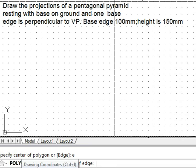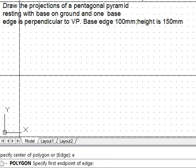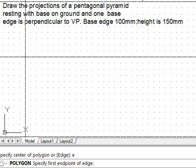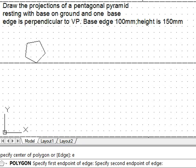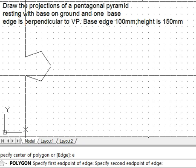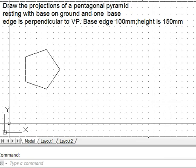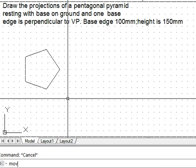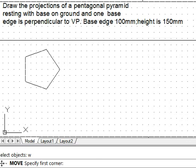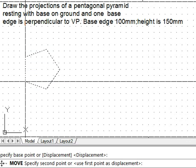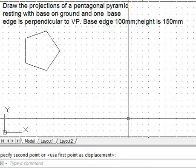It is four grid spaces. We note that here the base edge is perpendicular to VP also, so that condition is satisfied. I will move it a little bit so that we have space for its front view.